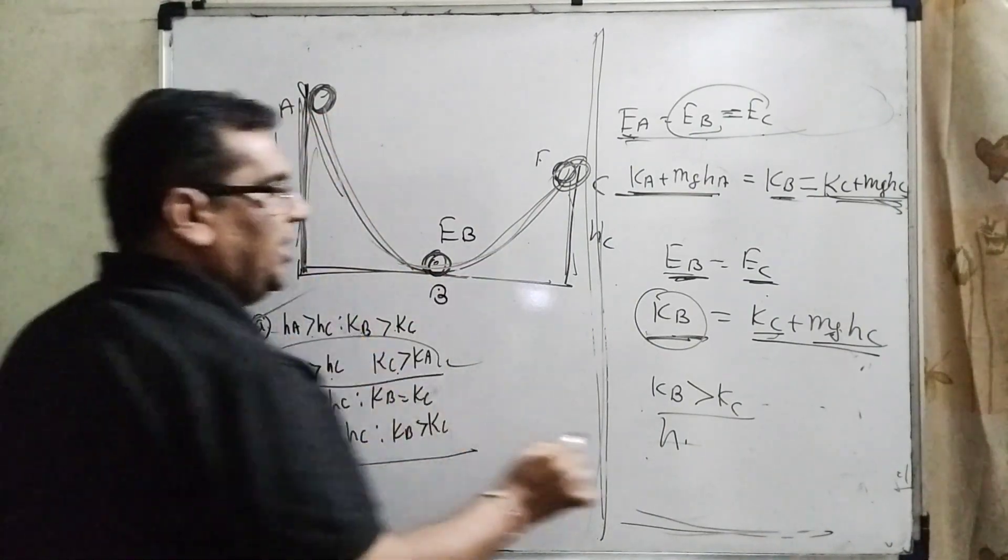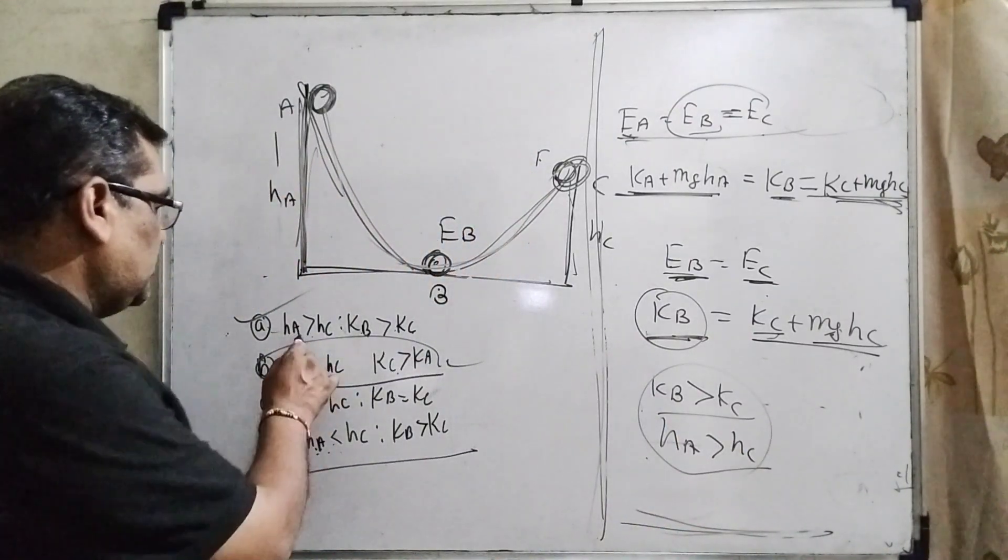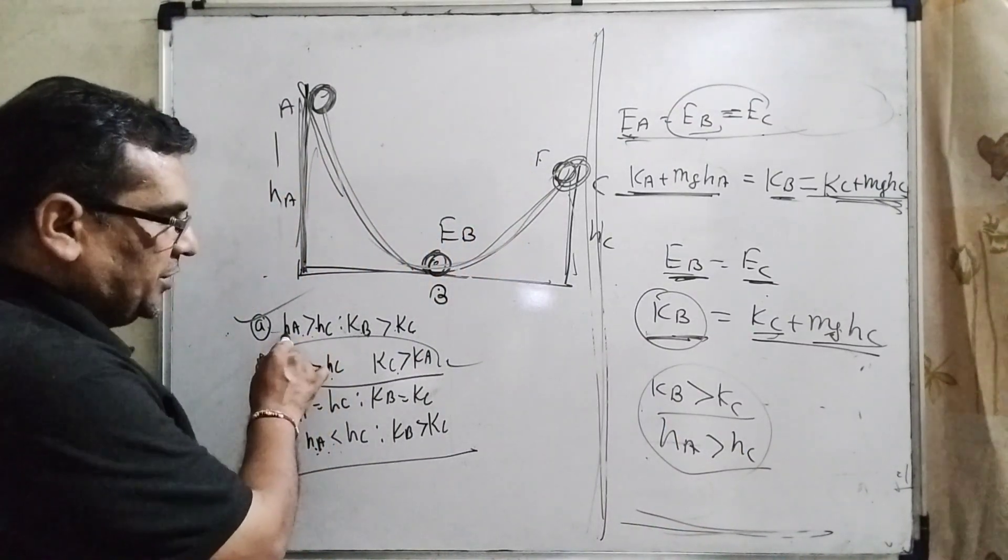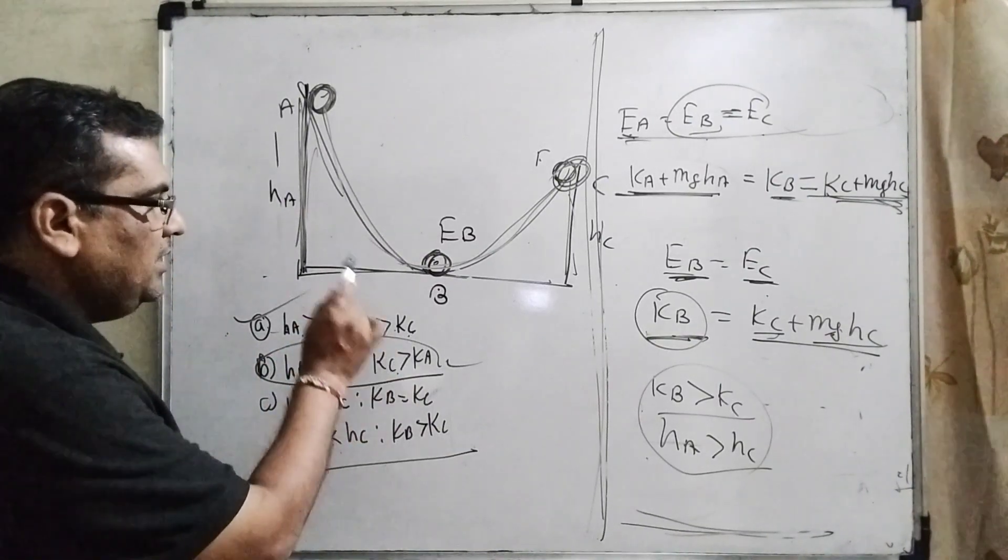So therefore, HA is greater than HC. So your first option is also correct: HA is greater than HC and KB is greater than KC. I hope you understand this question.